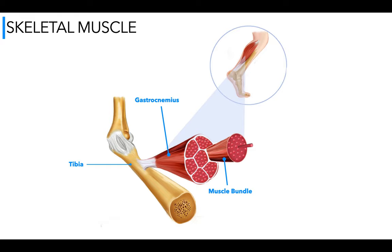So as you can see, we've got the gastrocnemius with attachment to the tibia. Then we have a muscle bundle, and within that muscle bundle is a muscle fiber. You can get much more complicated diagrams of this, but we don't need to go into action potential and recruitment of muscle fibers. We just need to focus on the characteristics for now. That is where you'll find a muscle fiber within the muscle belly within a bundle.